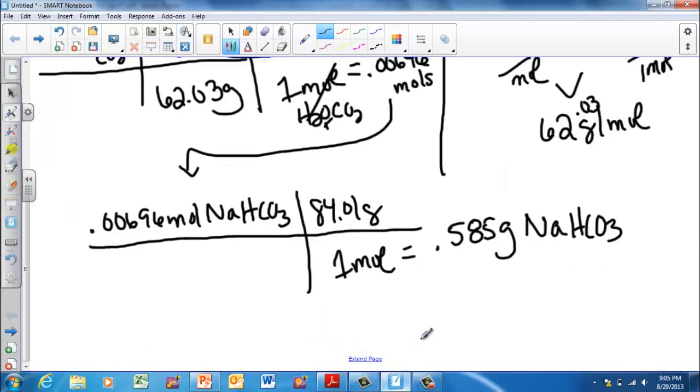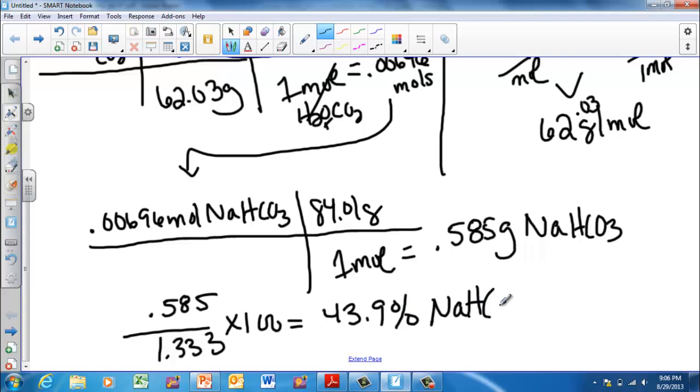Remember, you're trying to figure out the percentage for these. So all I have to do to figure out the percentage of sodium bicarbonate is take 0.585, divide it by the original 1.33, multiply it by 100, and I end up with 43.9% sodium bicarbonate, and then I just subtract that from 100 to get sodium carbonate.